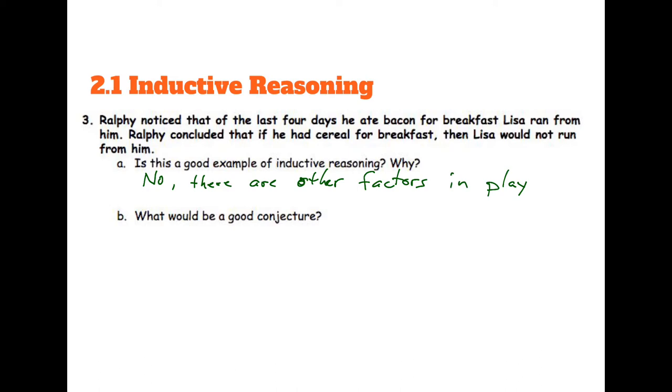In past years, students have said that maybe Ralphie and Lisa are dogs and whatnot, and that's just kind of like how they play and what they do. So there's so much going on here that that's not a good example of inductive reasoning. You can make a conjecture, though, if you want, based on this information.